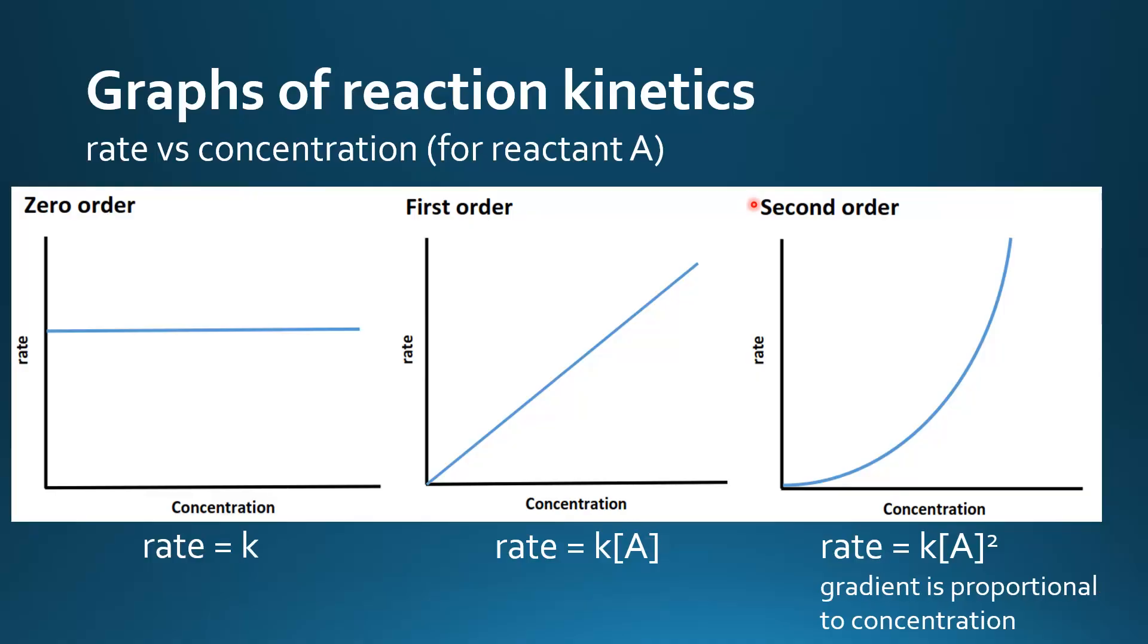Next is a second-order reaction. Here, the rate is proportional to the square of the concentration of A. And we have this curved line. The rate expression is rate equals K times the concentration of A to the power 2. And the gradient is proportional to the concentration.